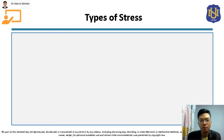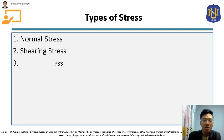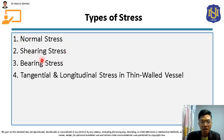These are the different types of stress we are going to discuss. The first one is normal stress. The second one is shearing or shear stress. The third one is bearing stress. The last one is the tangential and longitudinal stress in thin-walled vessels. For this video discussion, we will discuss the first two stresses — normal stress and shearing stress. The remaining third and fourth stresses will be discussed in our next video discussion.